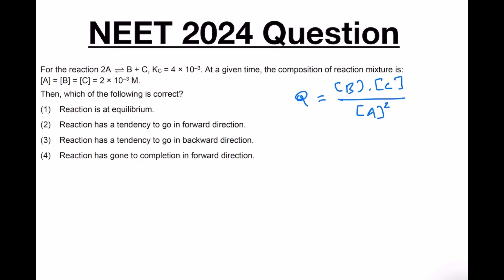All those values are given - A, B, C, all of them are 2 × 10^-3 mole per liter. Therefore if we substitute this, what we will get is simply 1, because 2 × 10^-3 in the bottom squared, then the same values are above for B and C.